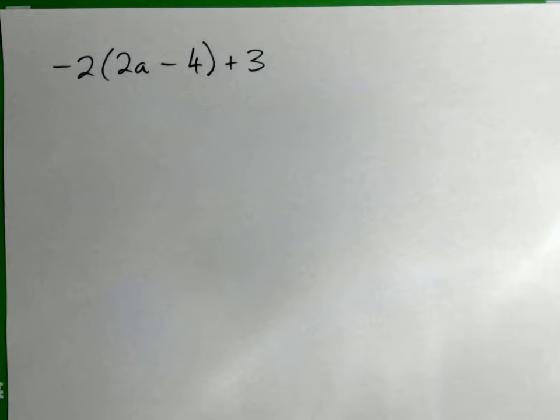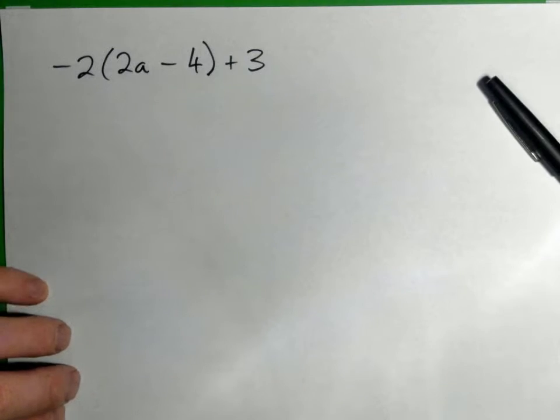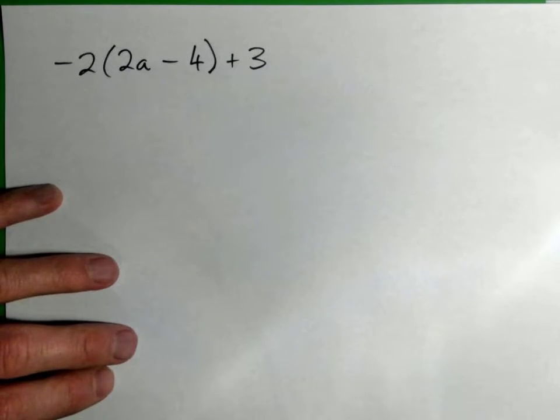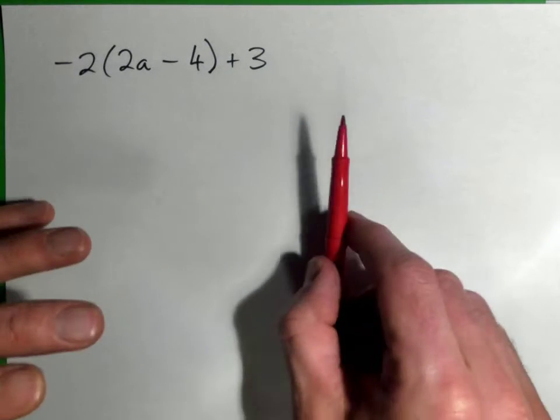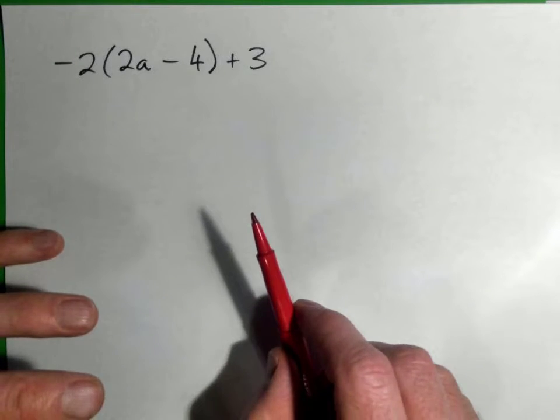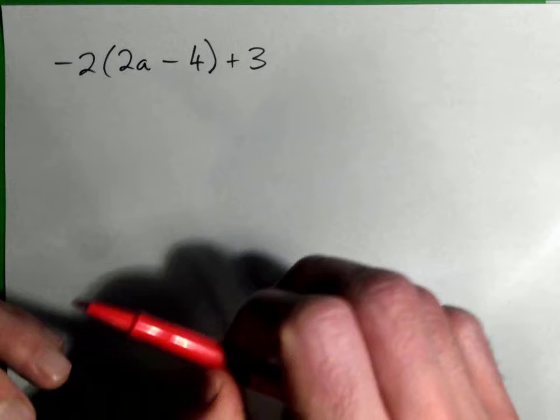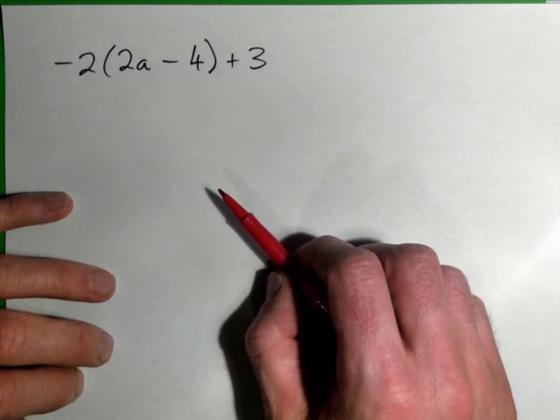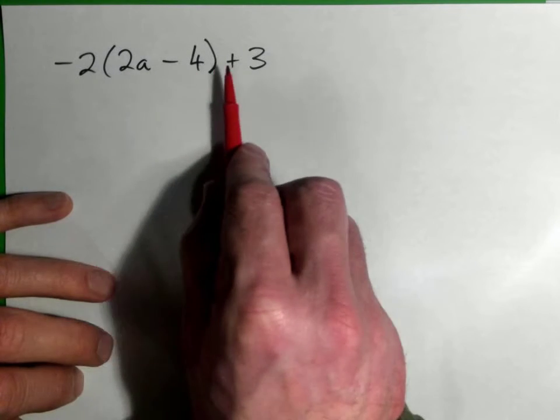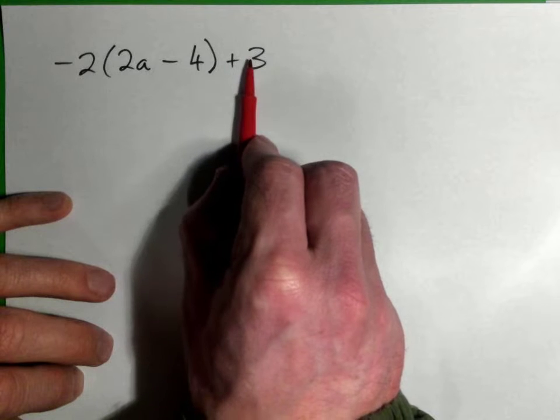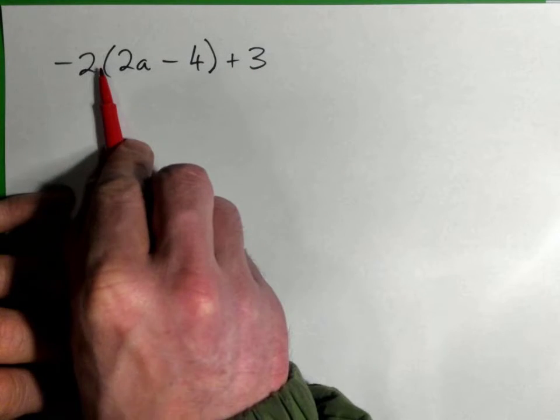Negative 2 times (2a minus 4) plus 3 - we have to simplify this and then add like terms. We're simplifying an expression. There's addition going on with the plus 3 and there's multiplication.